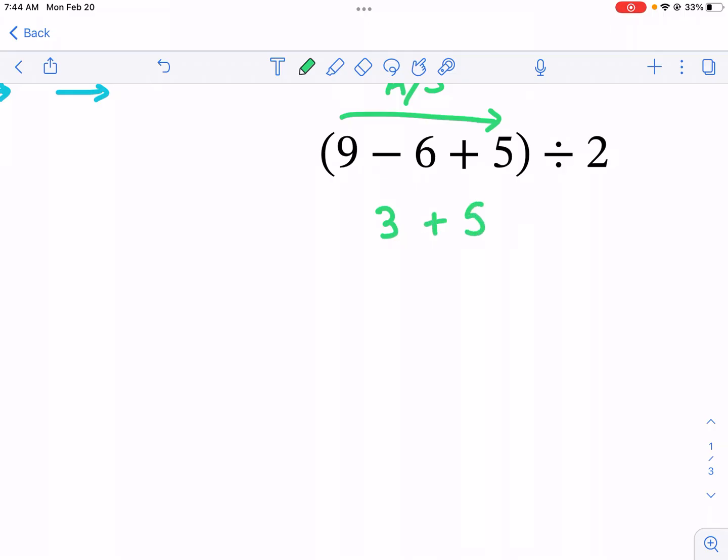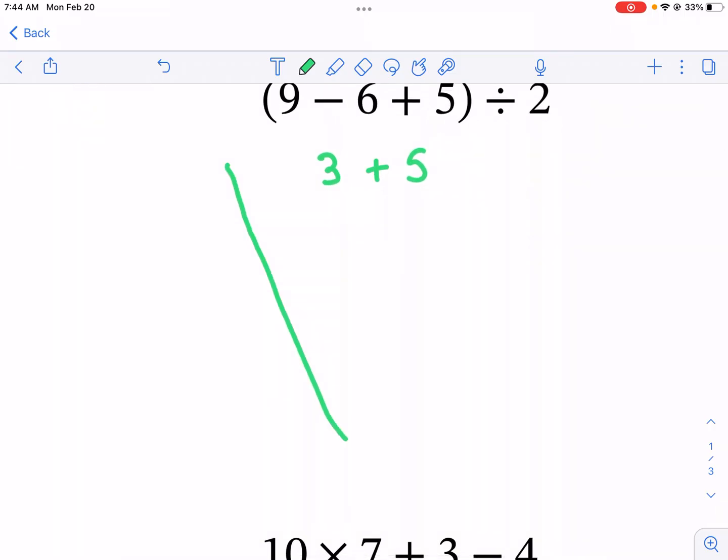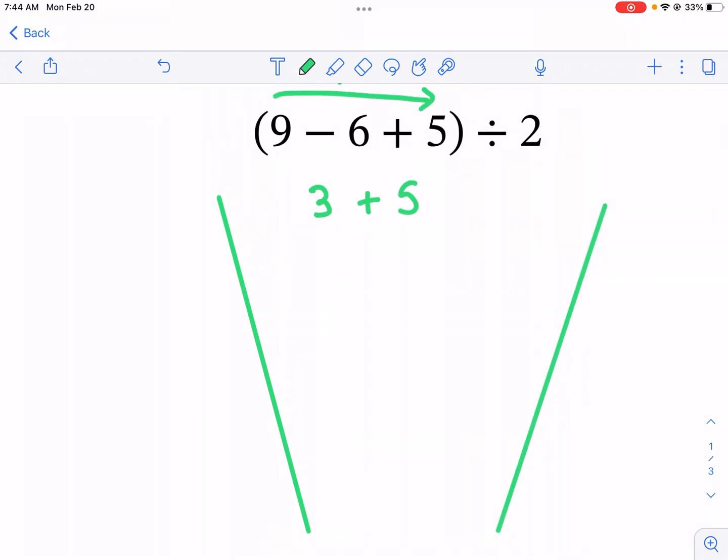I'm gonna do 9 minus 6—that gives me 3. Now one thing you can do is one step at a time, and I highly encourage this for younger learners—really start off slow and do it line by line and only one step at a time. But if you're someone that can do all that in your head, that's fine. I'm just gonna write 9 minus 6, that's 3 plus 5. I only did that step right there, and I'm going to rewrite everything else.